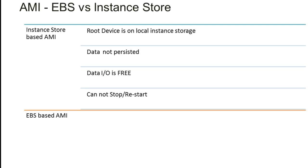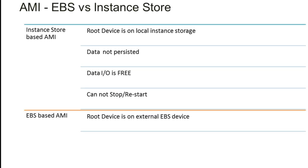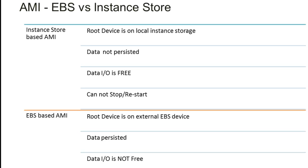Now let's look at the difference between EBS and instance store. Instance store based AMIs have their root device on a local instance store — data is not persisted, data IO is free, and you cannot stop and restart; you can only terminate the instance. EBS based AMIs have the root device on an external EBS volume — data is persisted, you can stop and restart the instance. However, data IO is not free since EBS is external to the actual server.